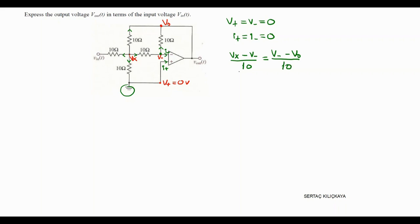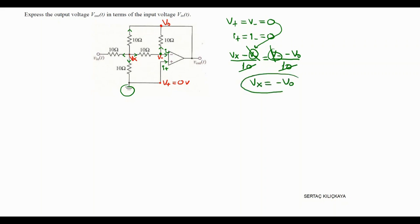Let me cancel those 10s. Since V minus equals zero, we can cancel those terms. What we get is Vx equals minus Vout. This is our first equation.